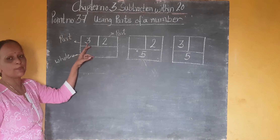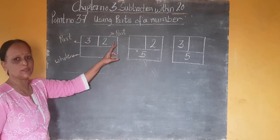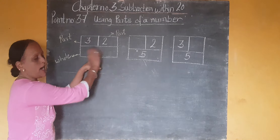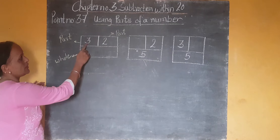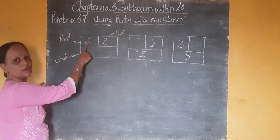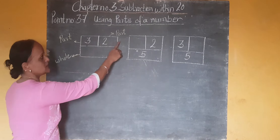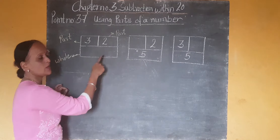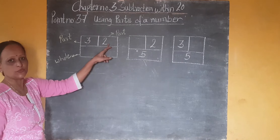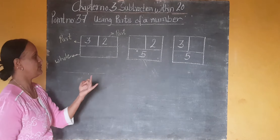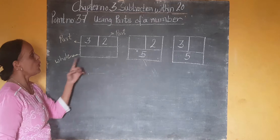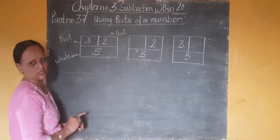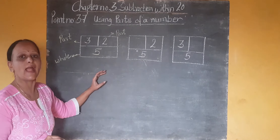This is one part, this is another part, and this is the whole of these two parts. So in the first part, which number is given? 3. And in the second part, 2. So 3 plus 2 — count forward till 2: 4 and 5. So what is the whole? 5 is your answer. Here we did addition.